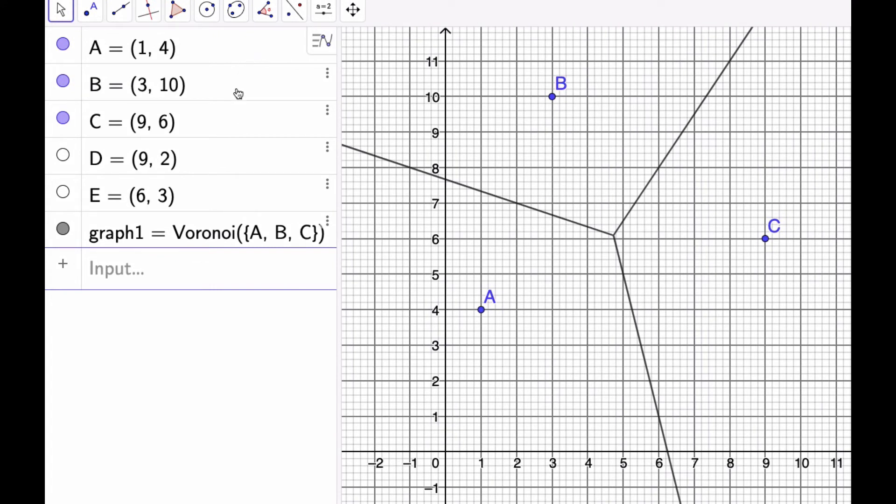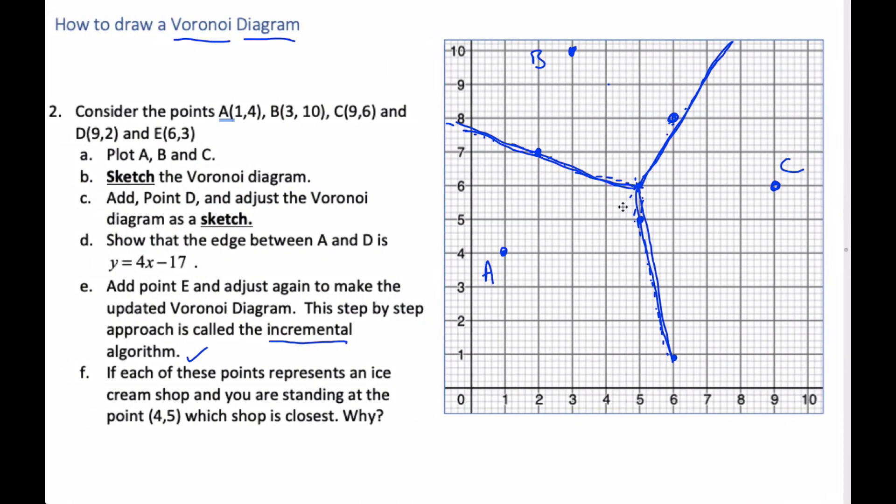it actually has a really nice command. I put A, B, and C in here. And if I type in Voronoi, it will, you can put the points in and it will make it. So if I look here, this is exactly what I have over here. It's the same thing. This point here is like five, six, five, six. It's pretty close.